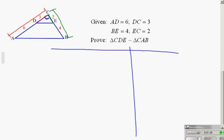We got to get our given. AD is equal to 6, DC is 3, BE is 4, and EC is 2.